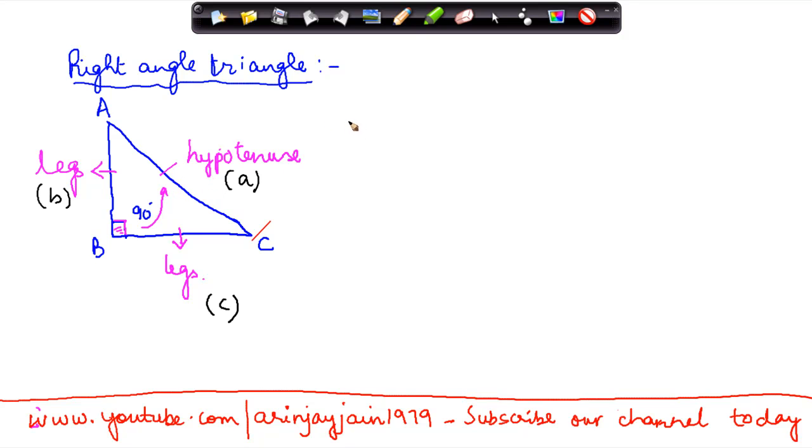Now in a right angle triangle there is a property which says that the square of the length of the hypotenuse, so suppose it is a squared, is equal to the sum of the squares of the legs. So one leg is b squared and the second leg is c squared.